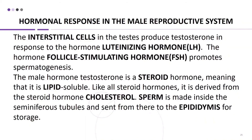The interstitial cells in the testes produce testosterone in response to the luteinizing hormone. The follicle-stimulating hormone promotes spermatogenesis. The male hormone testosterone is a steroid hormone, meaning it is lipid soluble. Like all steroid hormones, it is derived from cholesterol. Sperm is made inside the seminiferous tubules and sent from there to the epididymis for storage.